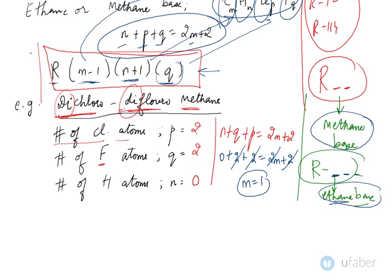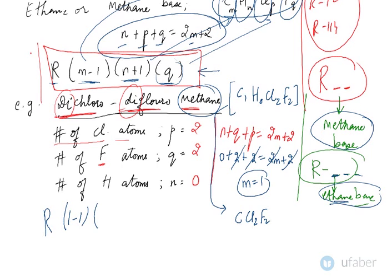This means the chemical formula can be written as: you have one carbon atom, so this would become C1. Hydrogen is 0. Cl is 2, Fl is 2. So this can be written as CCl2F2. It's a methane base, and the chemical formula will be R, 1 minus 1, N is 0, 0 plus 1, Q is 2. So this becomes R12.